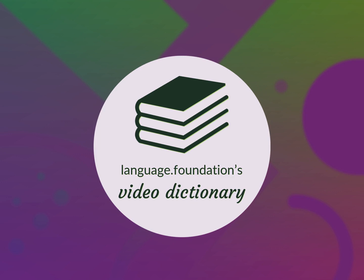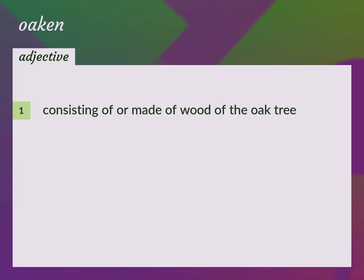Language.Foundation's Video Dictionary, helping you achieve understanding. Oaken: consisting of or made of wood of the oak tree. The old oaken bucket.